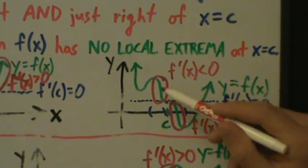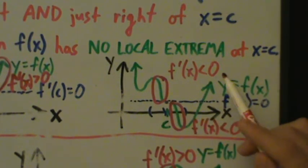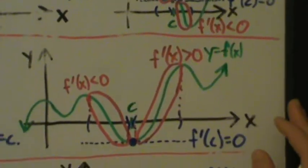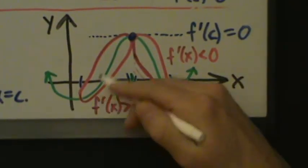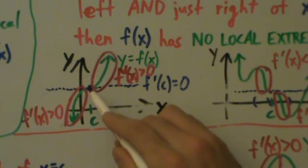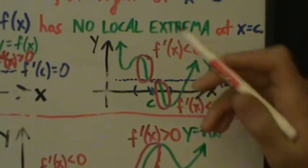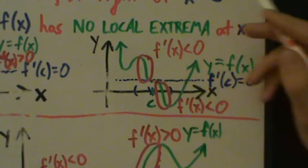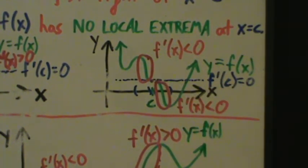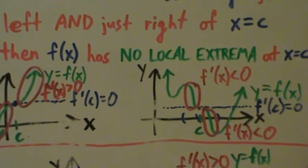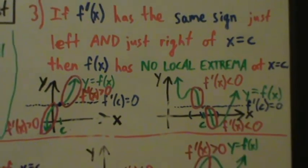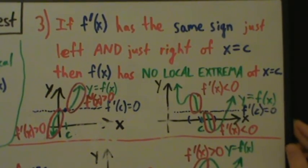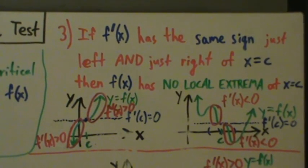In part one, the function turned back around — that's a local min. In part two, the function turned back around — that's a local max. In part three, the function just continues in the same direction, so there's no local min and no local max there. That's pretty much what the first derivative test says. In the next video, we'll talk about how to use it and work through examples.